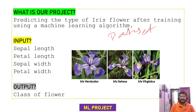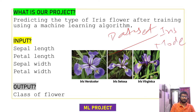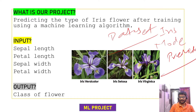The most essential part of any machine learning project is the dataset. We'll be using the Iris dataset. We feed the dataset to our model, use different algorithms, and then directly predict the output using the testing data.